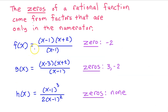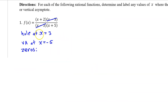Let's also discuss the zeros of each function. Remember that zeros come from factors in the numerator that are only in the numerator, like the x plus 2 shown here. The factor of x plus 2 that is only in the numerator gives us a zero of negative 2.